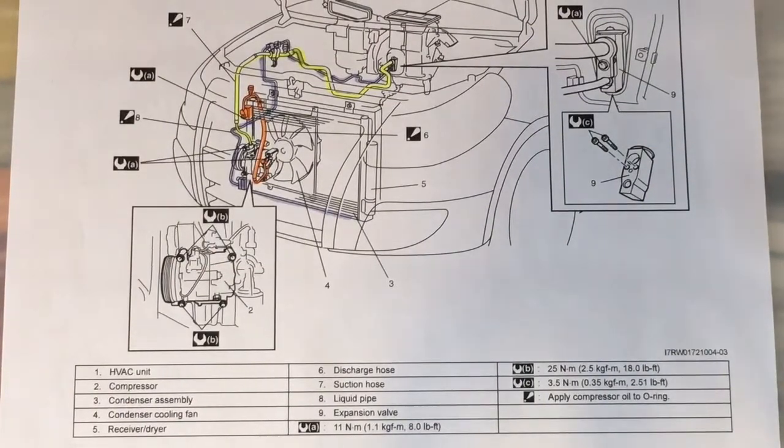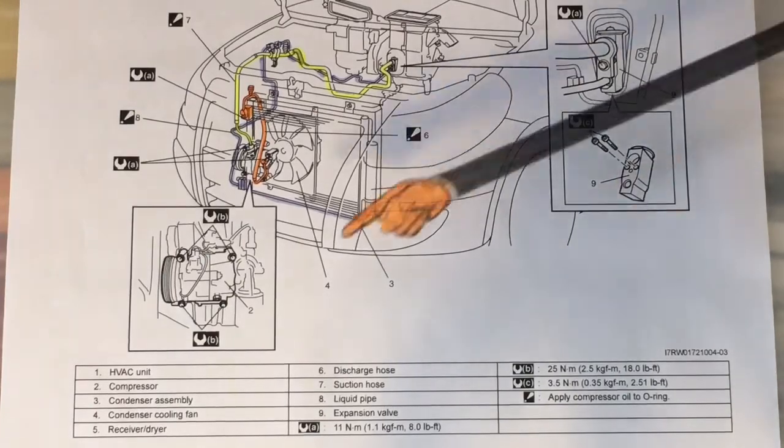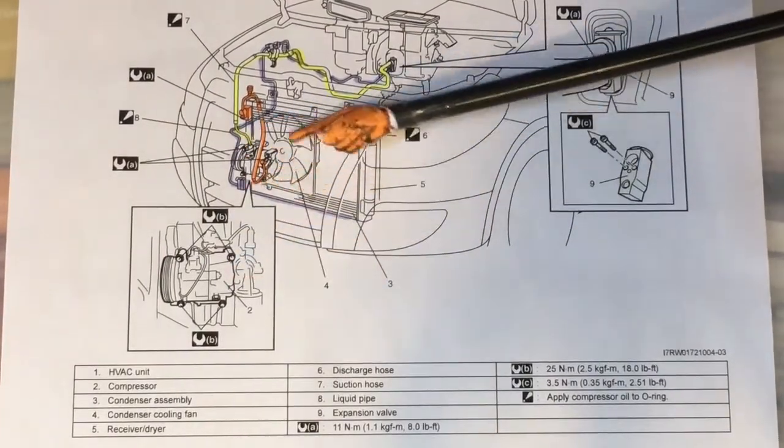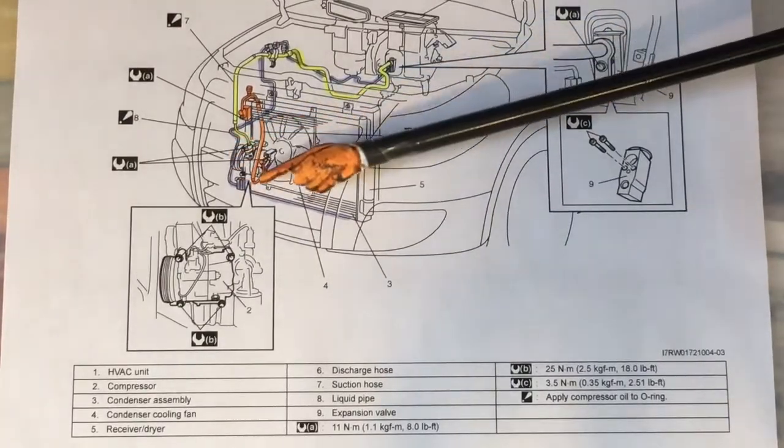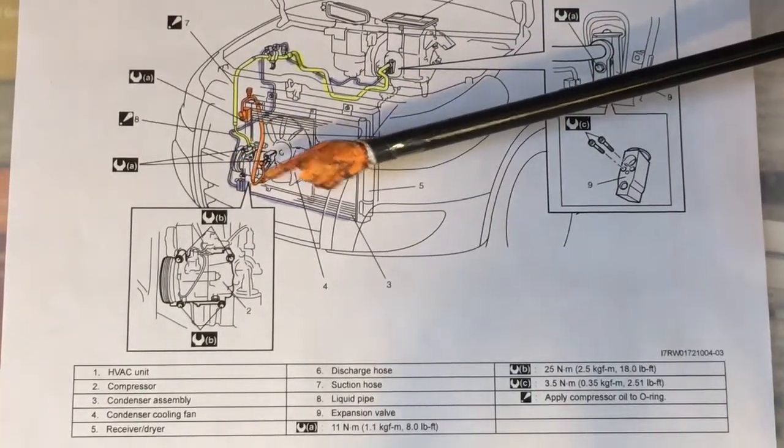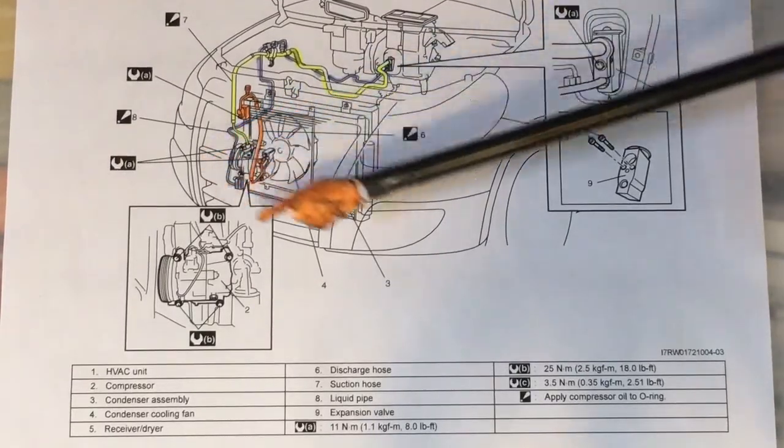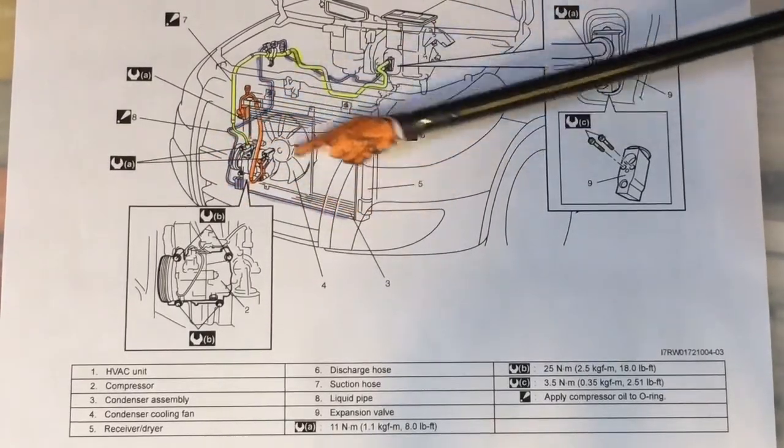You saw what it looked like in schematic form, here's what it actually looks like in reality. Let's start the same way we started on the schematic. Here's the compressor itself, located in the front end of the car just after the condenser coil and the radiator assembly.